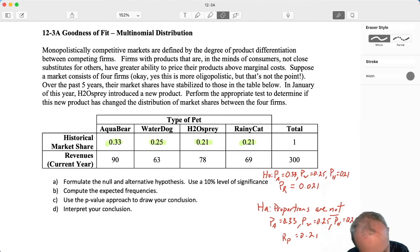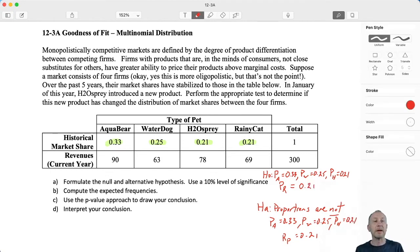There's a little typo right there. Too many zeros. Okay, so either the proportions are equal to what we already have in that historical data, or the alternative, it no longer follows that multinomial distribution. So we're going to do this test at the 10% level of significance.